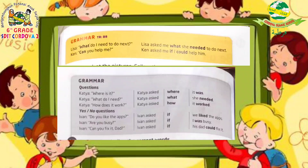The third example: Katya asked 'How does it work?' The embedded form becomes: 'Katya asked how it works.' As I said before, the word 'do' or 'does' is simply removed. Then for yes/no questions, for example: 'Do you like the app?' — the embedded form becomes: 'Even asked if we liked the app.'